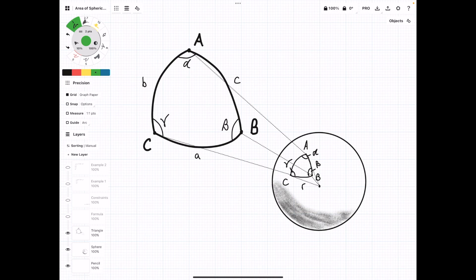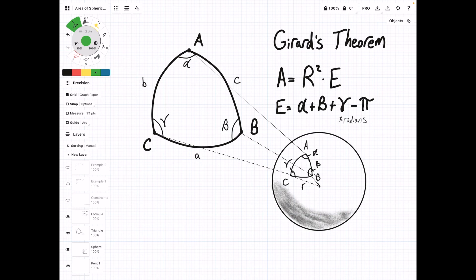In order to find the area of this triangle, we can use Girard's theorem, which is the area is equal to R squared times E, and E is the spherical excess. What that means is, in a spherical triangle, the sum of all the angles is in between 180 degrees and 540 degrees. On a regular triangle, everything has to add up to 180. That's not true for a spherical triangle.